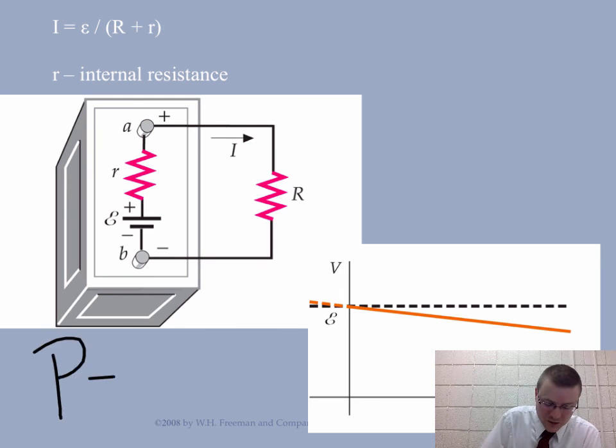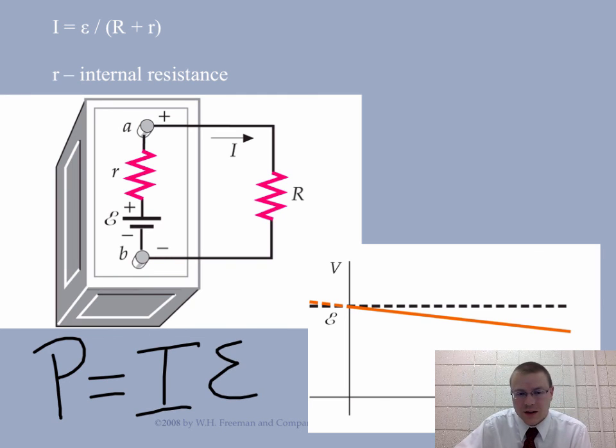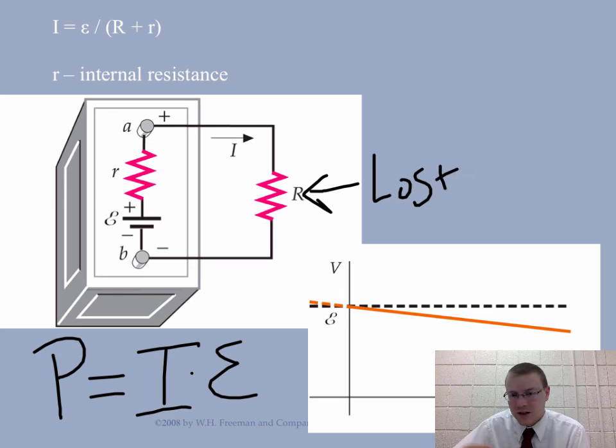And the last thing with batteries here is the amount of power that's delivered by a battery. Well, we've already come up with our power equations. It's current times voltage. In this case, it'll be the current times the electromotive force. So take I times the electromotive force, and you can get your power coming from the battery. That would be the amount of energy per second it gives the charges. Out here in the resistor, you can do the same equation, but that would be the power lost in the resistor to heat, sound, or whatever else you're trying to do.